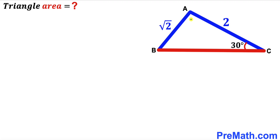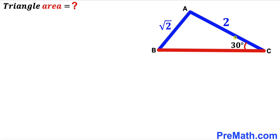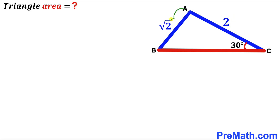Welcome to pre-math. In this video we have got triangle ABC such that angle ACB is 30 degrees, side AC length is 2 units, and side AB length is square root of 2 units. Our task is to calculate the area of this triangle ABC.